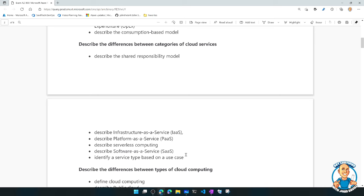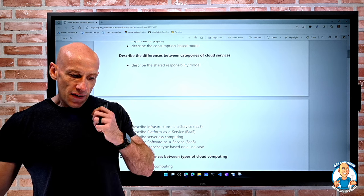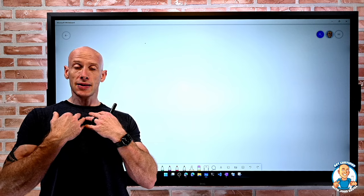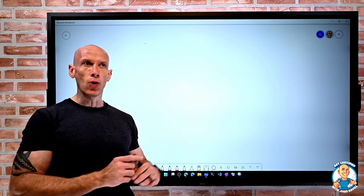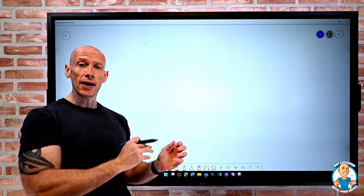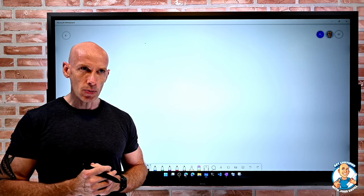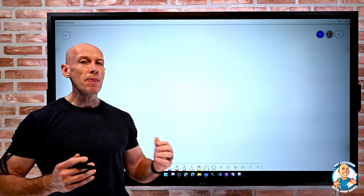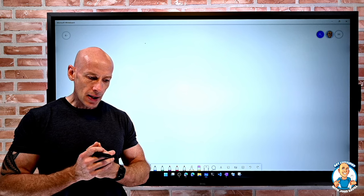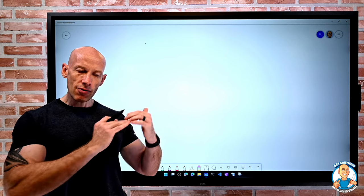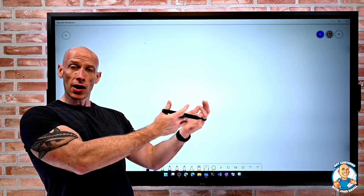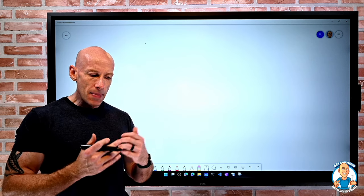So we're going to hit five of those assessed skills in this particular video. Now if you think about shared responsibility, the idea here is that as the customer there are certain things I am responsible for, and then as the provider there are things Microsoft and Azure are responsible for. Now who is responsible for what actually varies depending on what service we're using, but it's definitely the idea that there are different layers in any particular service.